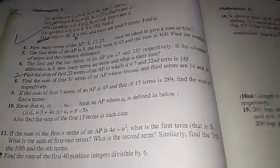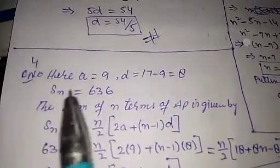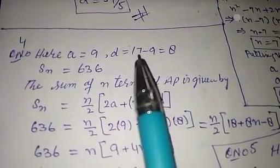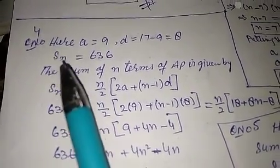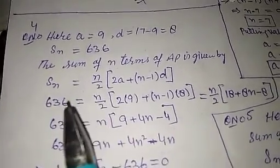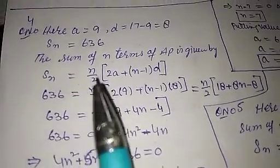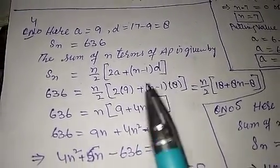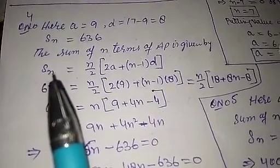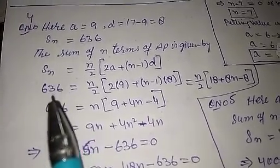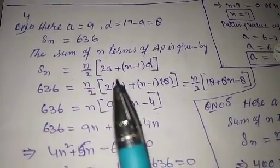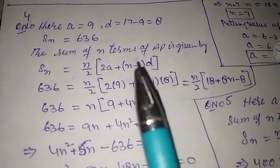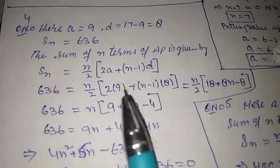Now we will solve Question Number 4. Here d = second term minus first term = 17 − 9 = 8. We set Sn = 636. The sum of n terms of AP is given by Sn = n/2 × [2a + (n−1)d]. So 636 = n/2 × [18 + 8(n−1)]. Substituting the values of a and d, we simplify.